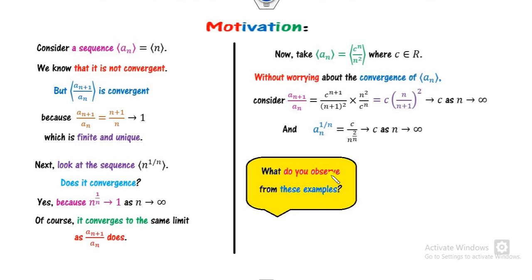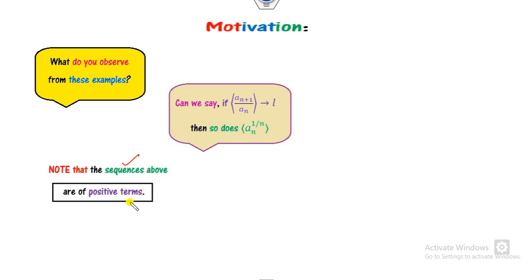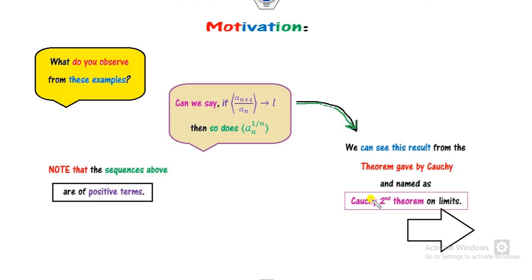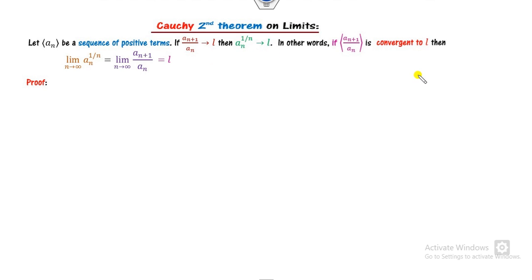So what do you observe from these three examples? If A_{N+1} upon A_N converges to some limit L, then A_N raised to power 1 by N converges to the same limit L. One important thing: in all three examples, the sequences have positive terms. Once the sequence has positive terms, this result is given by Cauchy and named Cauchy's Second Theorem on the Limit. The statement is: if A_N is a sequence of positive terms and A_{N+1}/A_N converges to L, then A_N raised to power 1 by N also converges to the same limit L.